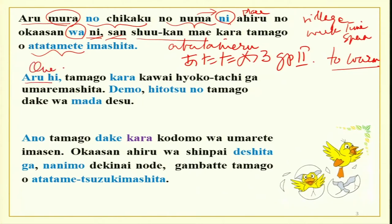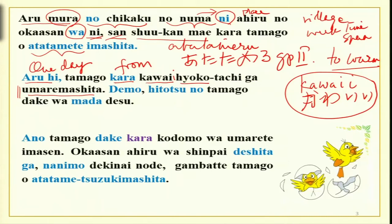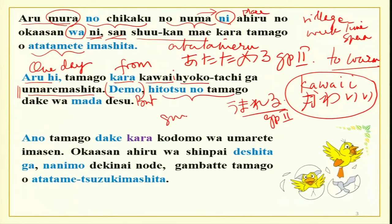Aruhi — one day, as we say in English when telling a story — tamagokara, from the eggs, kawaii hyokotachi ga umaremashita. Kawaii has a double 'i' — it's an i-adjective. Hyoko is chicks, and umaremashita means they were born. Demo — but — hitotsu no tamago wa mada desu. Hitotsu is the counter for small irregular objects (hitotsu, futatsu, mittsu). Only one egg had not hatched yet.